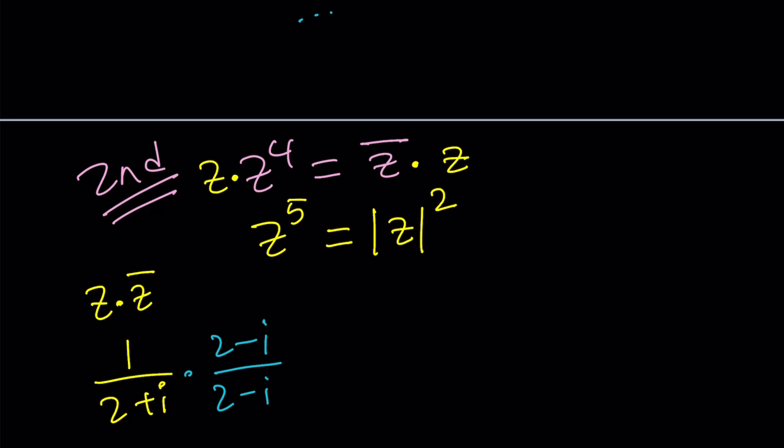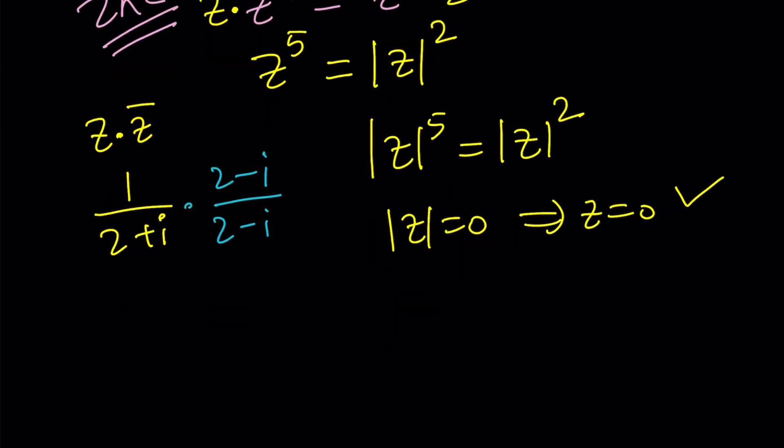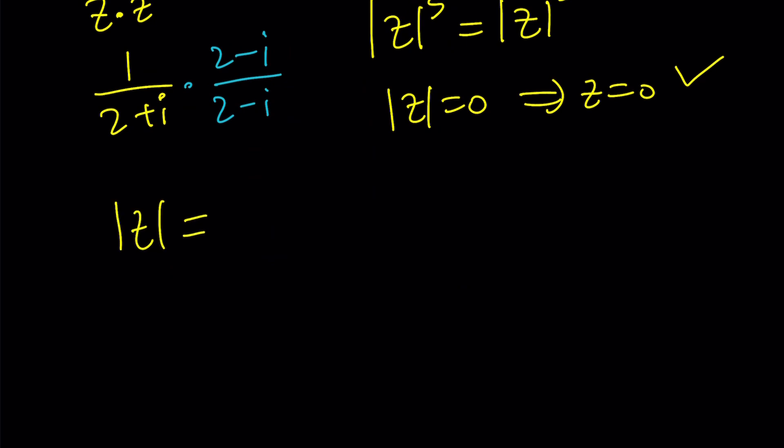So let's go ahead and multiply both sides by z. If you multiply both sides by z, on the left hand side, we're going to get z to the fifth power. And on the right hand side, we're just going to get the absolute value of z squared. So how does this help? We can go ahead and take a look at the absolute values. The absolute value of z to the fifth is going to be the same thing as absolute value of z squared. And then you're going to get absolute value of z is zero or absolute value of z is one.